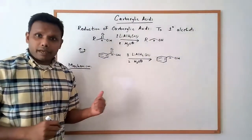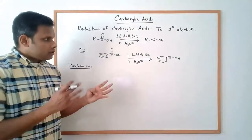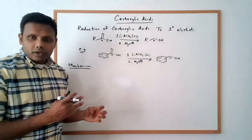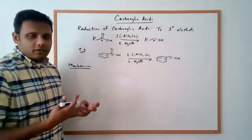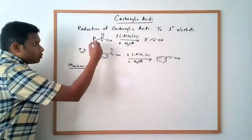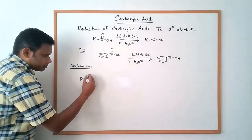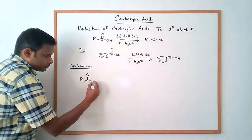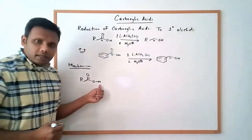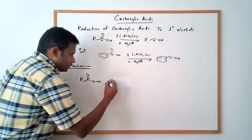We'll look at the mechanism of this reaction next. This mechanism, to start off, is going to look a little weird. If you think about it, our reactant is a carboxylic acid, which has an acidic hydrogen in its structure.